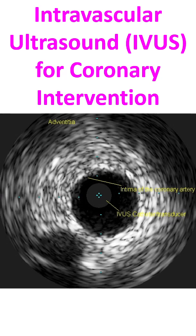Incomplete stent apposition can be detected by intravascular ultrasound. In cases where the balloon has fractured the plaque but the stent has not expanded fully, contrast will fill the space between the stent and the arterial lumen, and lack of apposition may not be evident on angiography. IVUS will detect this and post-dilatation can be advised, resulting in good stent apposition and lesser late lumen loss. IVUS is also useful to find the cause of residual haziness in the stented region; it could be poor dilatation or thrombus, which can be differentiated by IVUS.